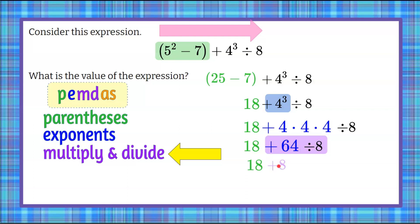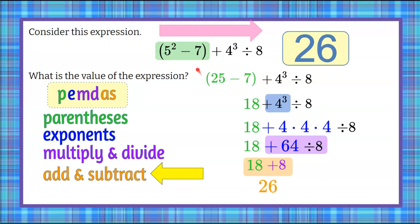So 18 add 8, and our last thing we're going to do is finish by adding and subtracting. 18 add 8 is 26. So our answer to this expression is 26. That is the value. You would get a very different answer if you didn't follow this order.